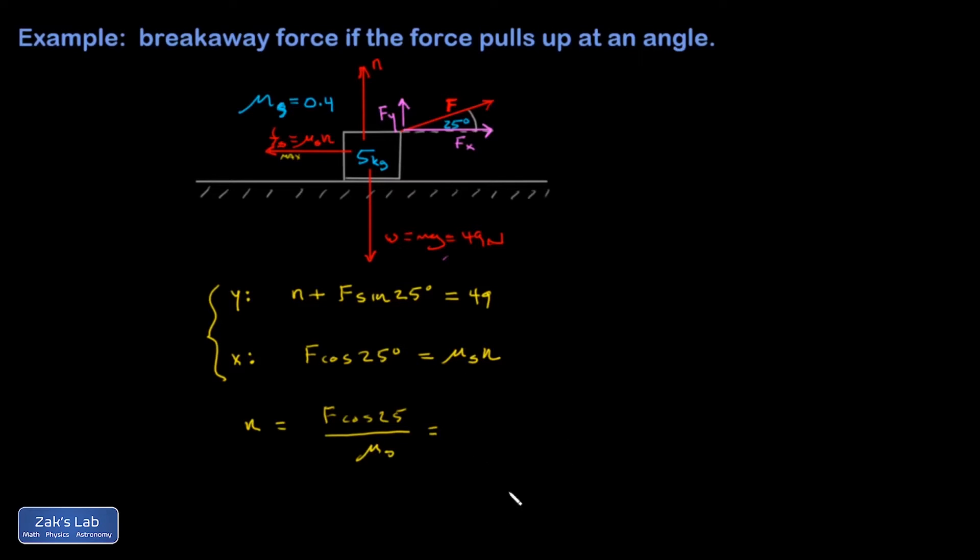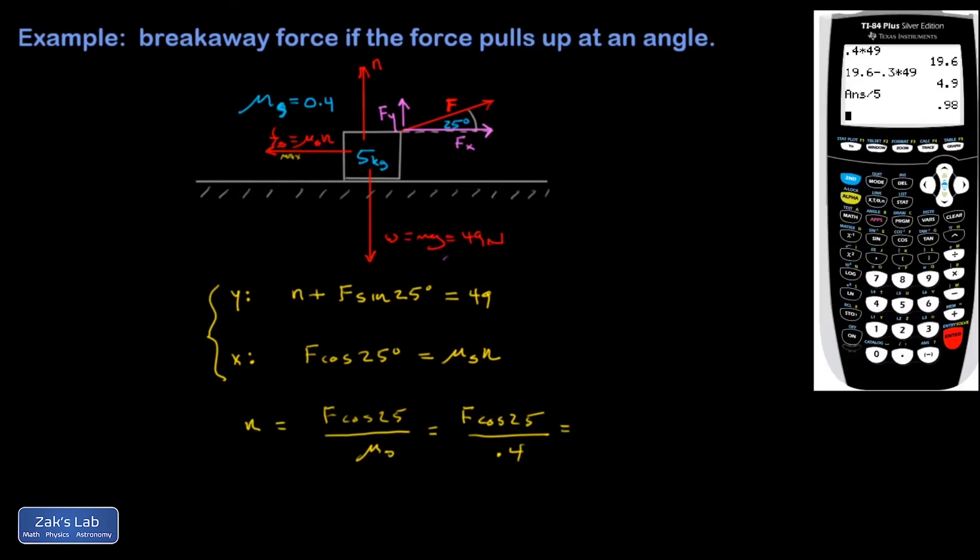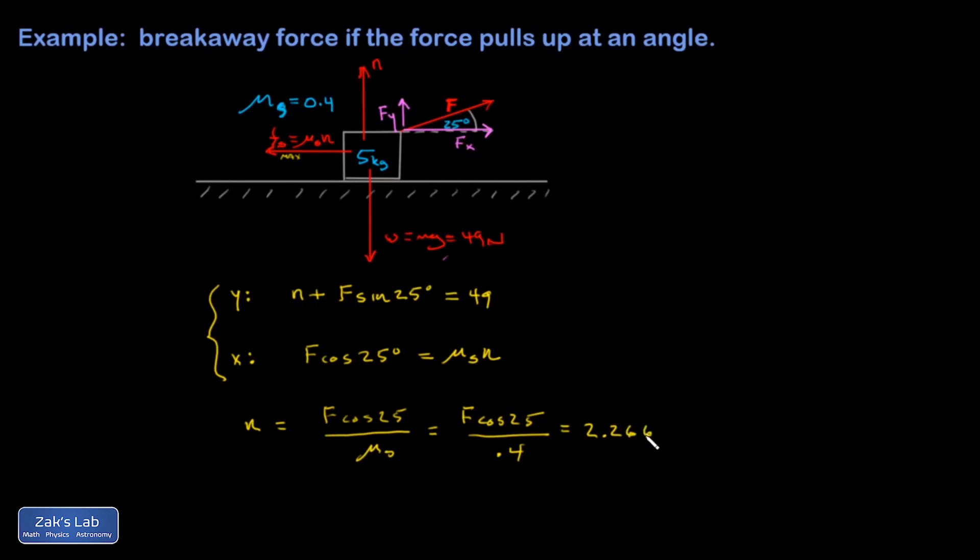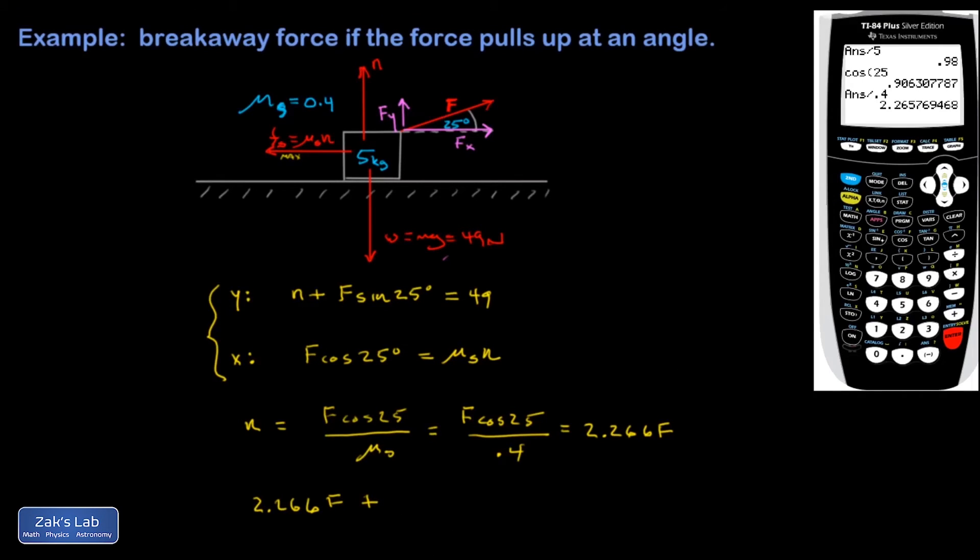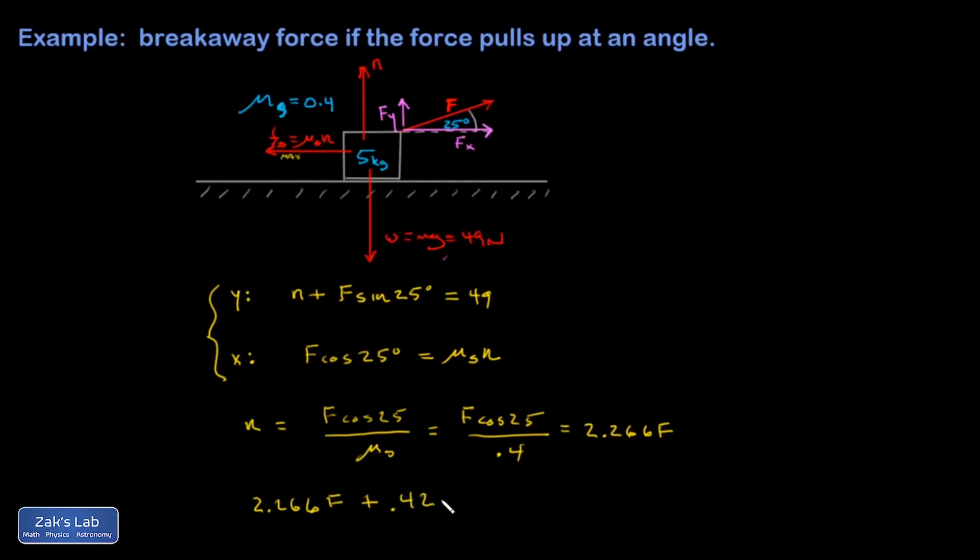And I'm going to go ahead and be casual about the numbers here. We're not trying to solve something symbolically in general, so I'm going to go ahead and get a decimal approximation on cosine 25. So I get 2.266 F. Okay, and then we're going to take that N and go into the y equation, so I have 2.266 F, and then F sine 25. Let's just get a decimal approximation on that sine 25 and get 0.423 F equals 49.